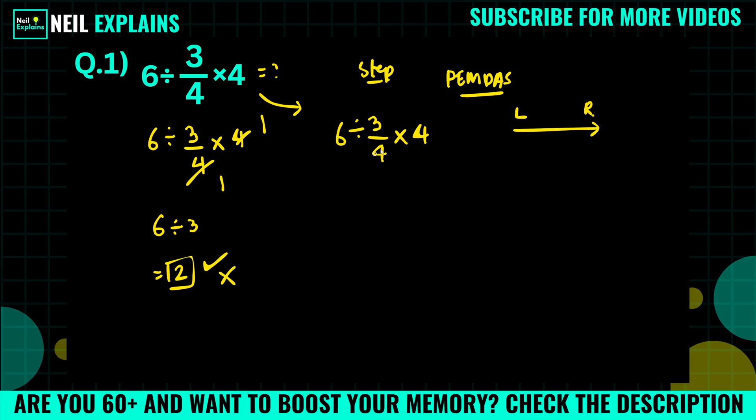Here two operations are there, division and multiplication, and as we know both are the same priority. We have to solve left to right, so first we have to solve for this. So when we solve this actually we are using the KCF approach.